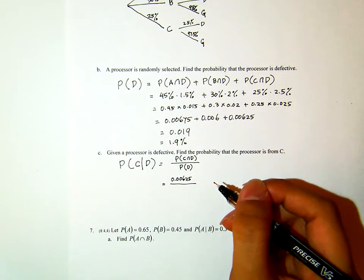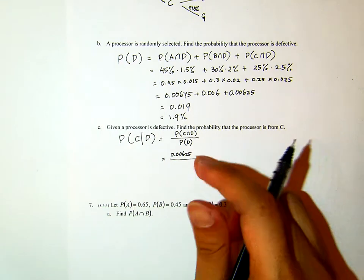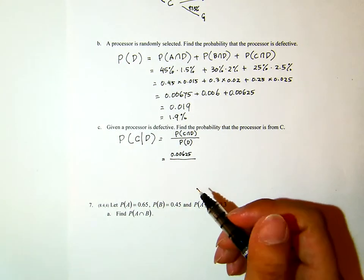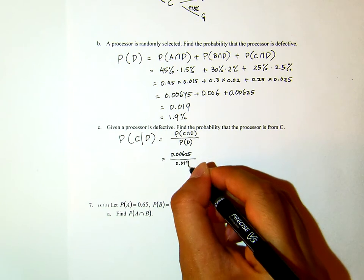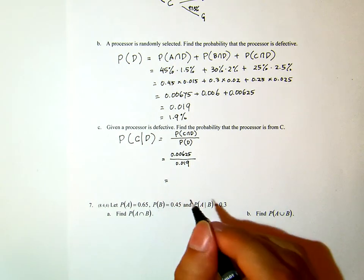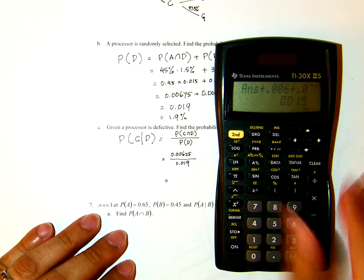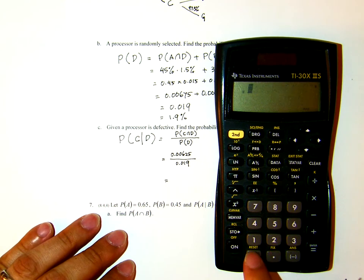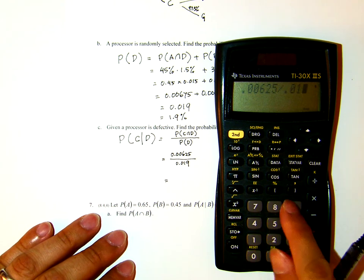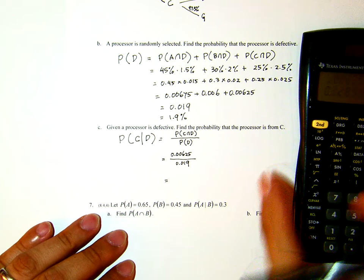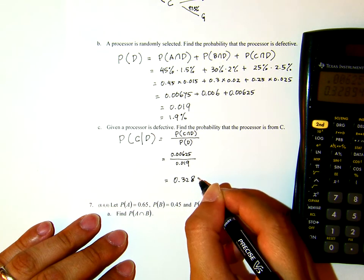Now, from the top, we happen to do the computation already. The probability that it is from company C and defective is 0.00625. Of course, that's a very small probability, right? But the probability that the processor is defective is very small also. Now, once you have a defective processor, which one you should go to? Now, let's see. This is 0.00625 divided by 0.019.